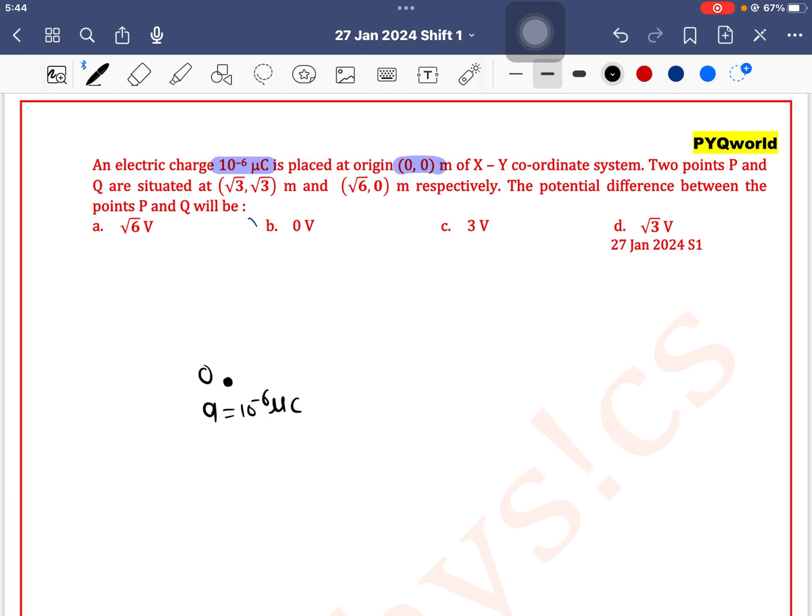Two points P and Q are situated at - P point is here and Q point is here - having coordinates (√3, √3) and (√6, 0). The potential difference between the points P and Q will be?